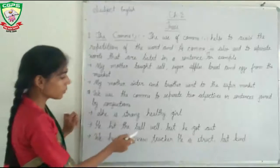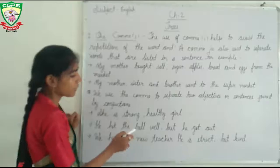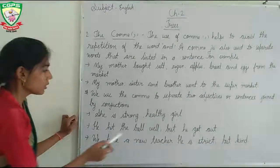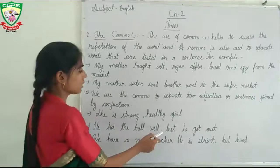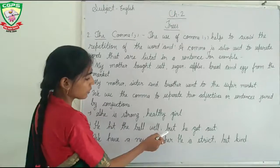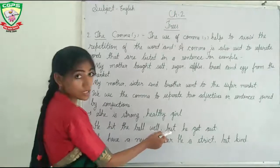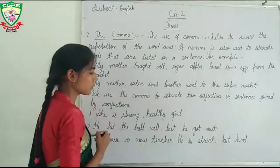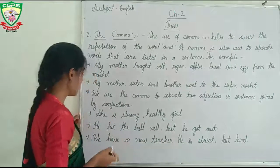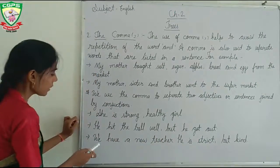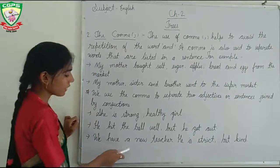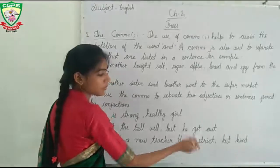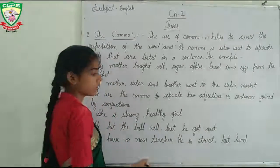For example: 'He hit the ball well, but he got out.' Here we use a comma before 'but' to separate two parts of the sentence. Another example: 'We have a new teacher. He is strict but kind.' We use the comma to separate two adjectives.